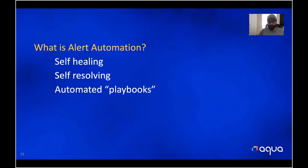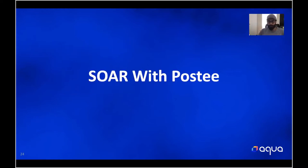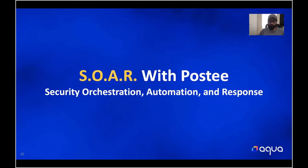So if you put the two together, what is alert automation? It should be self-healing, where an alert essentially takes care of itself. In other words, we're automating the playbooks that exist today in the DevOps world — a series of steps defined to achieve a certain task upon the arrival of an alert. For today's talk, the title is 'SOAR with Postee.' For those not familiar, SOAR is an acronym that stands for Security Orchestration, Automation, and Response. Combining all these things, the system should possess all these qualities to handle and manage your alerts.